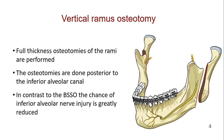The vertical ramus osteotomy is a procedure whereby full thickness osteotomies of the rami are performed. When performed bilaterally, they divide the mandible into two smaller condyle-bearing segments and a large segment consisting of the anterior ramus, mandibular body, including the teeth and chin.